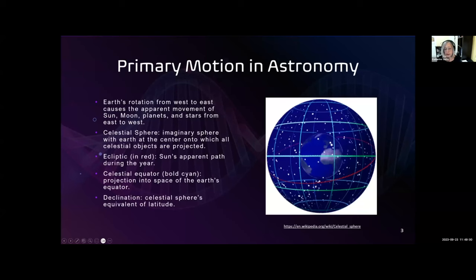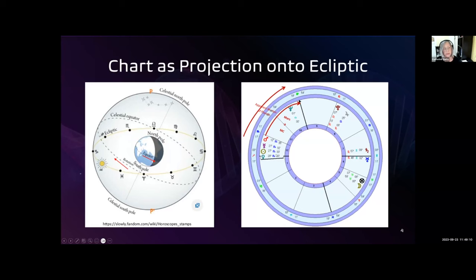Primary directions. The familiar chart wheel is a 2D representation of the ecliptic. So basically the planets are projected from whatever various positions they're at onto the ecliptic, and we come up with the standard wheel for charts. The outer red arrow is the apparent motion of the planets, and the inner red arrow here shows Mars directed to the midheaven. And we'll talk a lot more about directions in this talk.